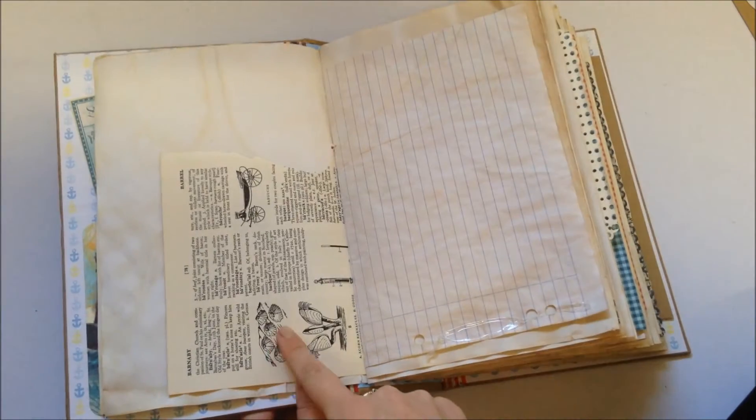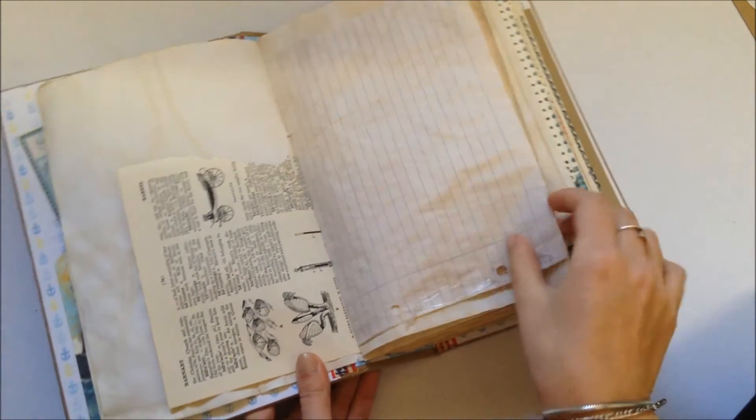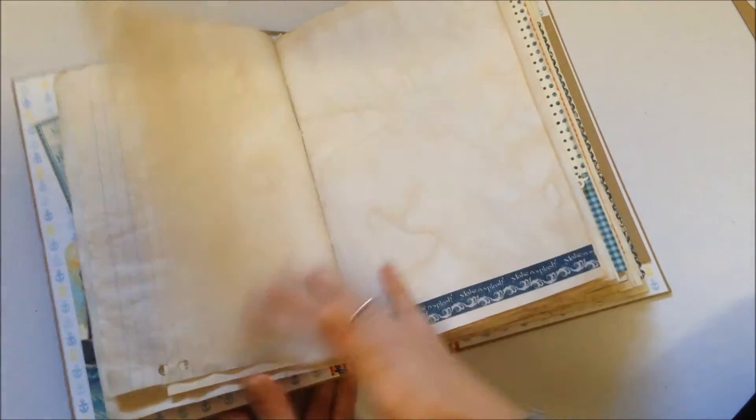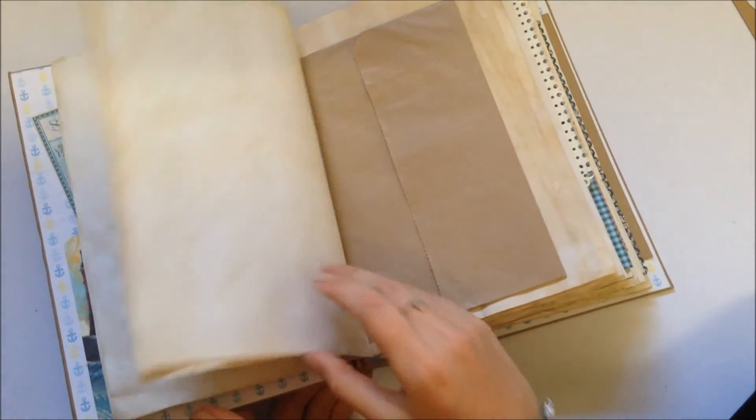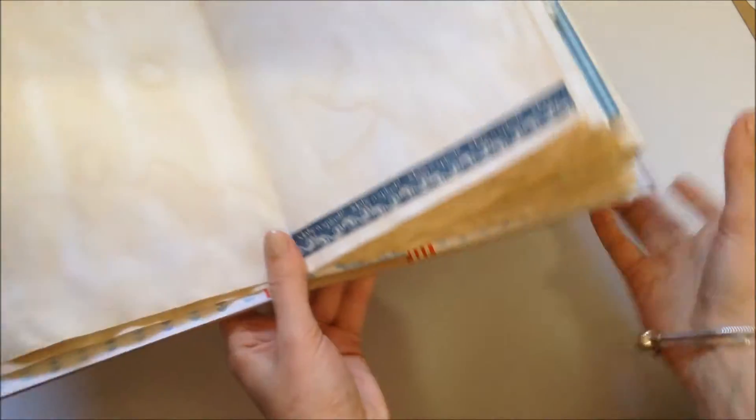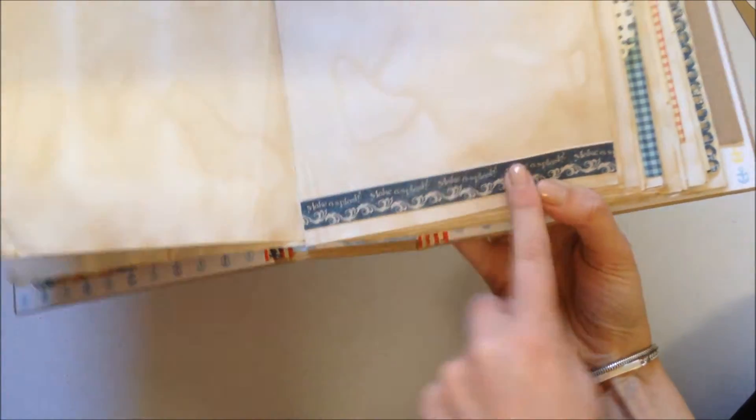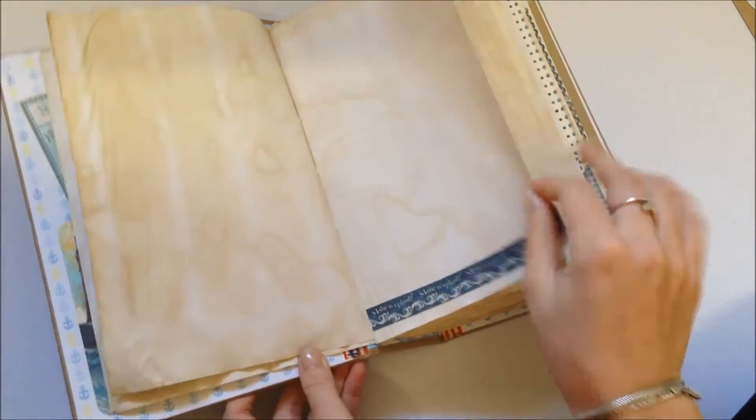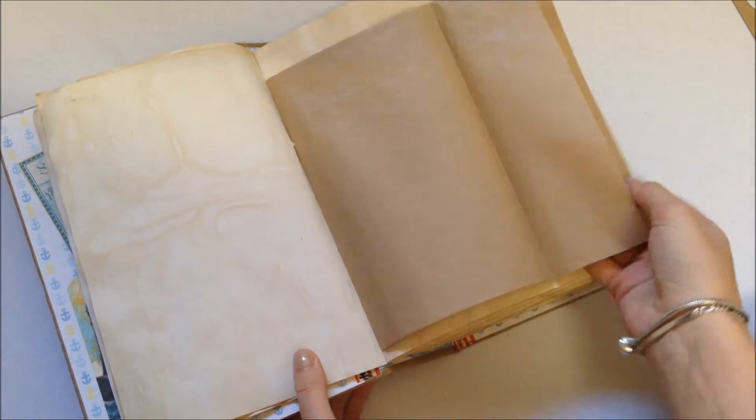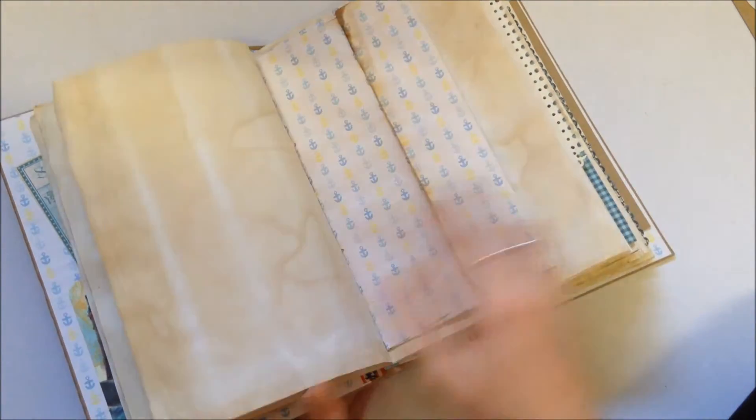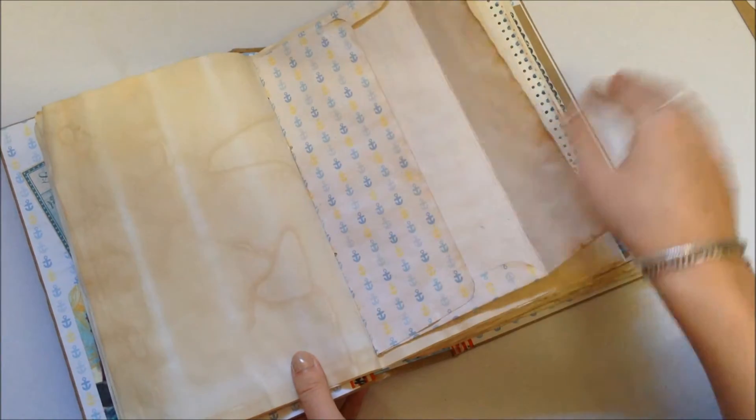And it's got some barnacles, some land paper. Skipped one. I've put some of the border strips throughout the journal, a paper bag, an envelope, big one.